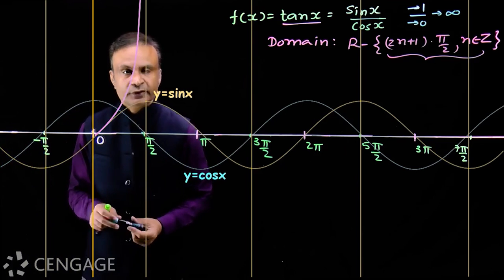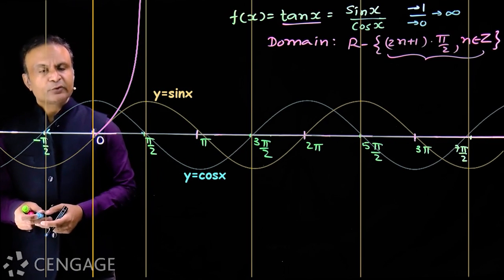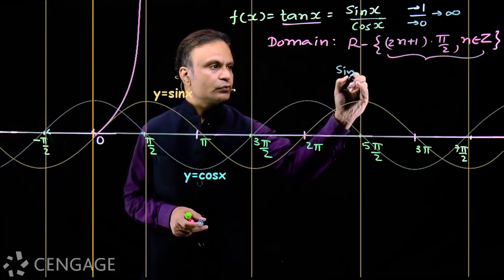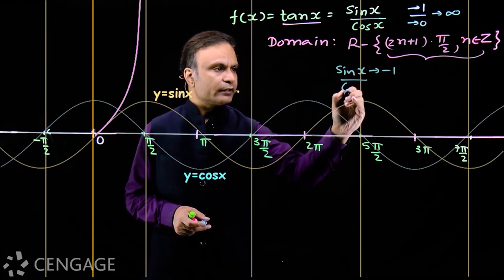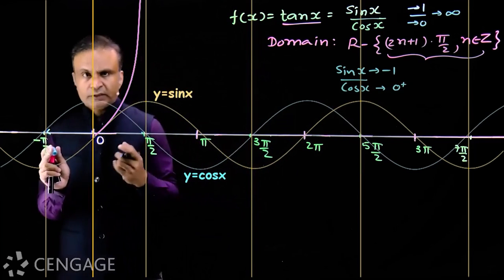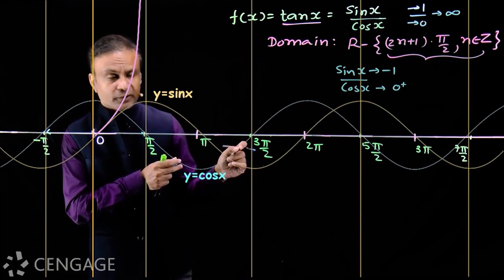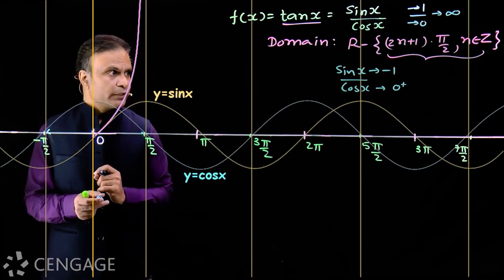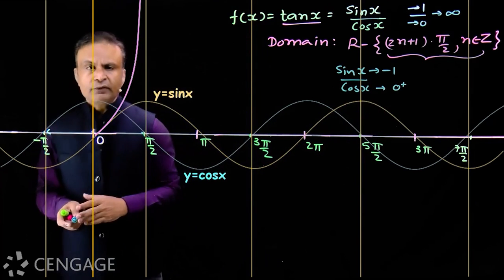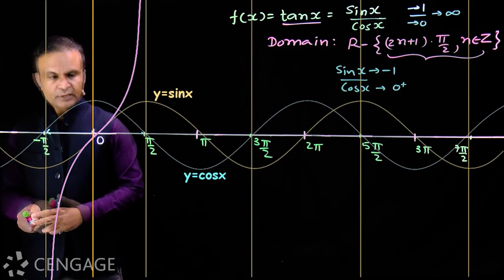What happens as x approaches -π/2 from its right-hand side? sin(-π/2) = -1, so sin x approaches -1. Cos x approaches 0 from the positive side (0⁺) in the fourth quadrant. Therefore the ratio tends to -1 / 0⁺ = -∞. So the graph in the fourth quadrant increases from -∞ to 0.